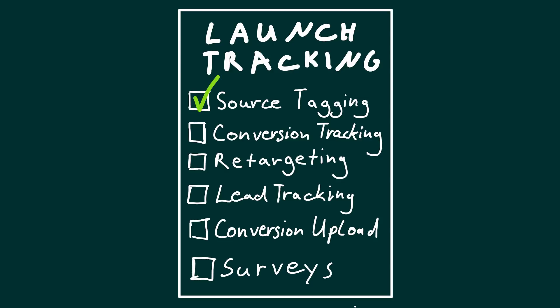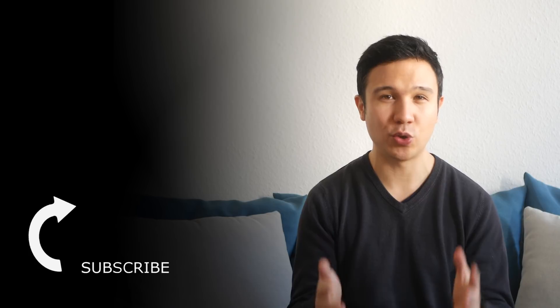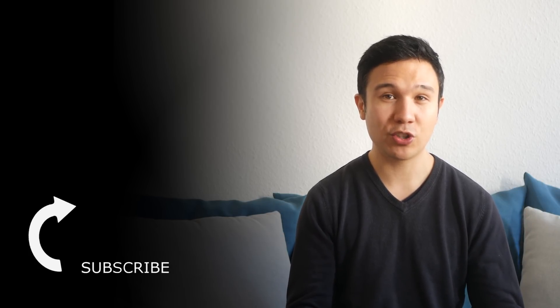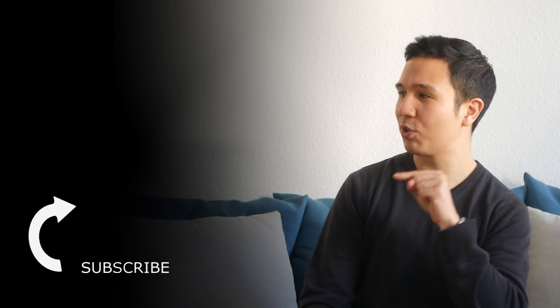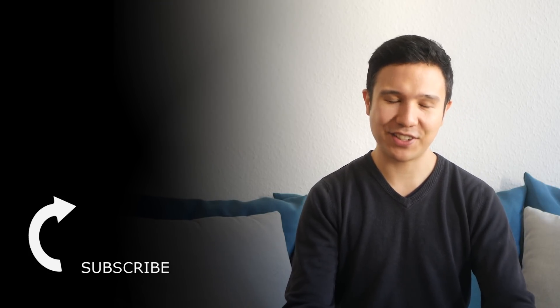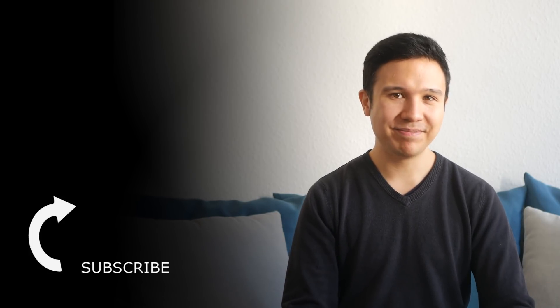All right, that's it with my little checklist. To recap: the first checkpoint is whether your sources are tagged correctly; second, conversion tracking is set up correctly; third, retargeting setup is correct. For more advanced techniques you have lead tracking and conversion upload, and last but not least, surveys after every purchase. That was my checklist that I went through for the client to make his launch successful from a data and learning perspective. I'd love to hear from you if I forgot anything — let me know in the comments below. Please consider subscribing because we bring you new videos like this one every week. My name is Julian — see you in the next one.